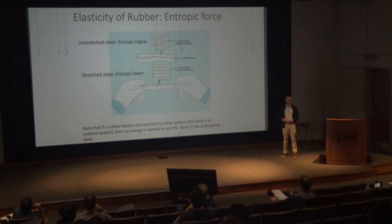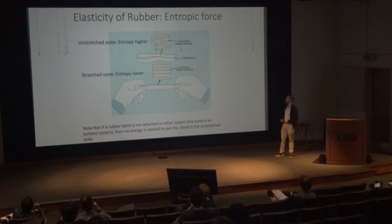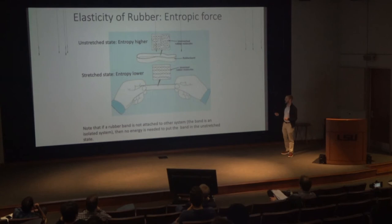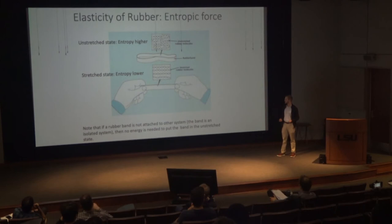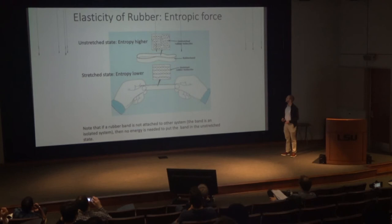A great example of an entropic force is that of a rubber band. A rubber band is made of polymers that, when unstretched, are in a maximally jumbled state, corresponding to a state of high entropy. When you stretch the rubber band out, the polymers become more lined up with each other and there are fewer states available, thus decreasing the entropy. If you have a stretched rubber band in an isolated environment, it requires no work or energy to return to its unstretched state — this is characteristic of entropic forces overall.